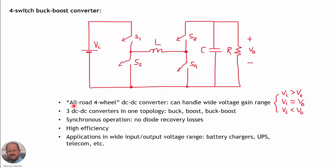We can say this is an all-road four-wheel DC-DC converter because it can handle a wide voltage gain range. The converter can handle input voltage higher than, similar to, or even below the output voltage. So in reality we have three DC-DC converters in one topology: a buck converter, a boost converter, and a buck-boost converter.